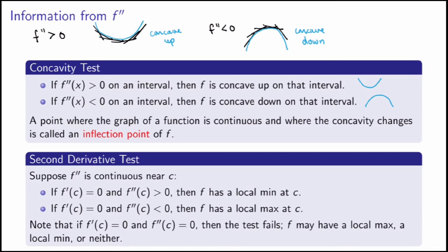The second derivative gives us another way of determining whether a critical point is a local min or max, but it only works for critical points that are zeros of the derivative. If the first derivative is zero and the second derivative is positive, f has a local min; if the second derivative is negative, f has a local max. However, if both derivatives are zero, the test fails — you cannot conclude anything and must use the first derivative test instead.